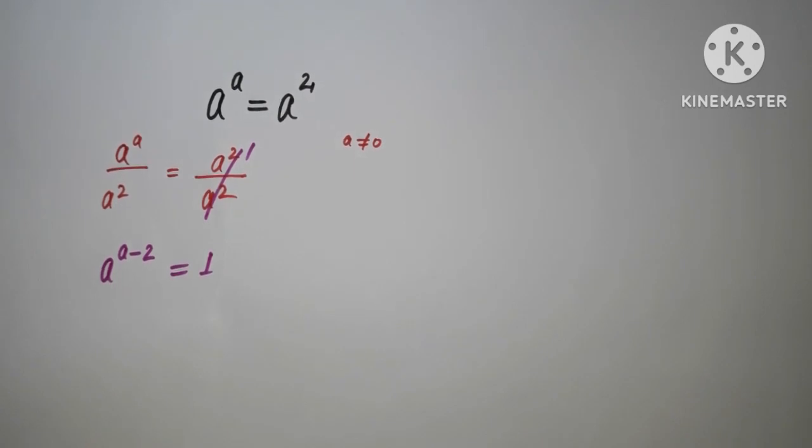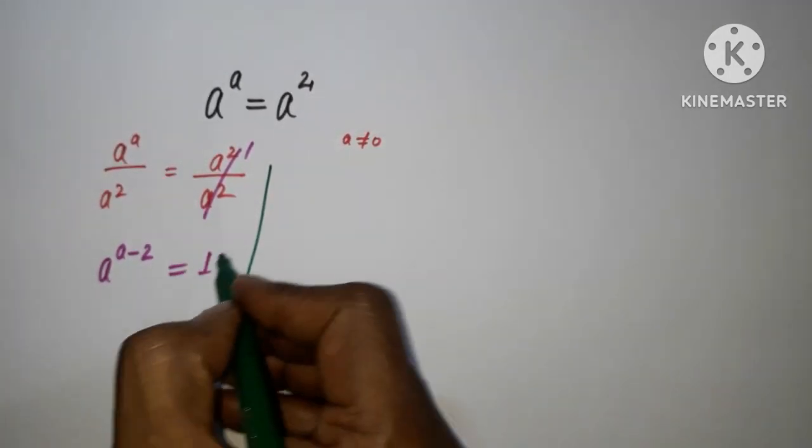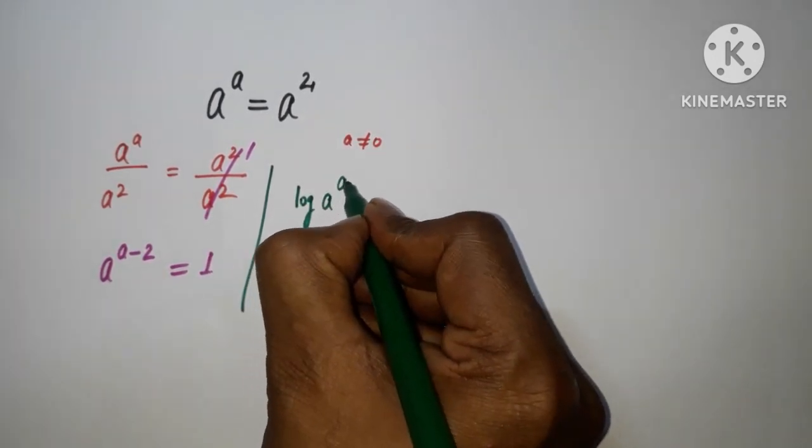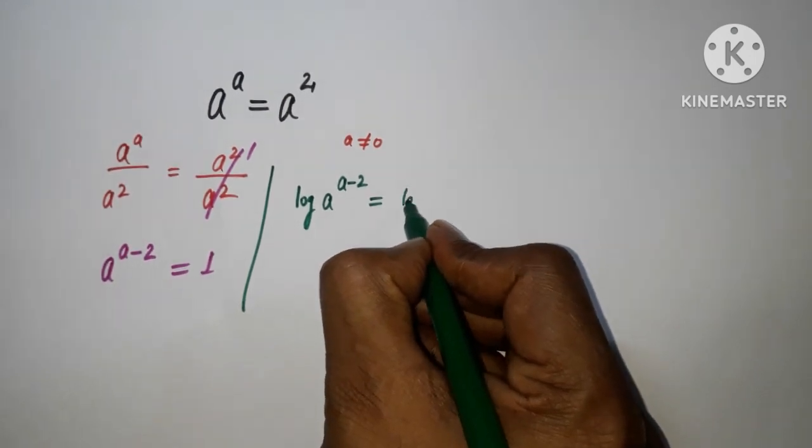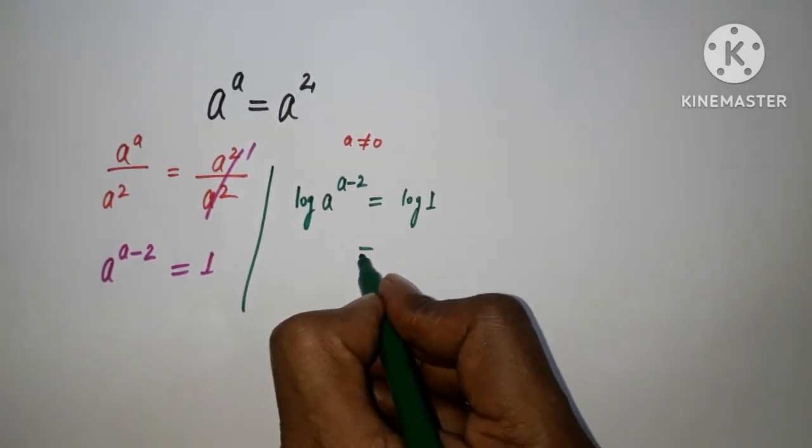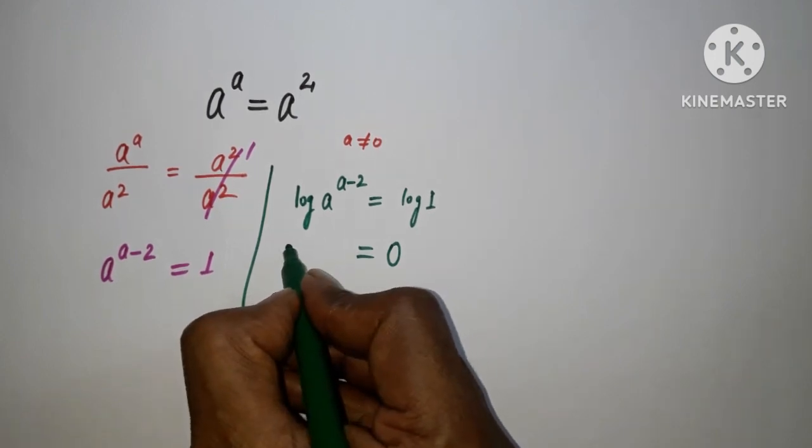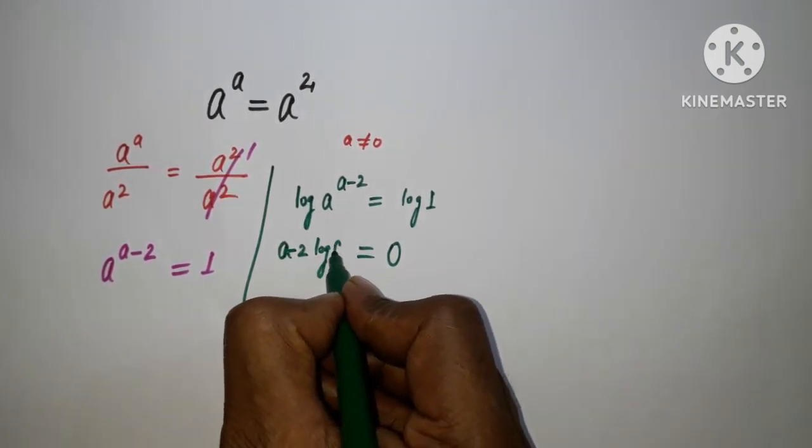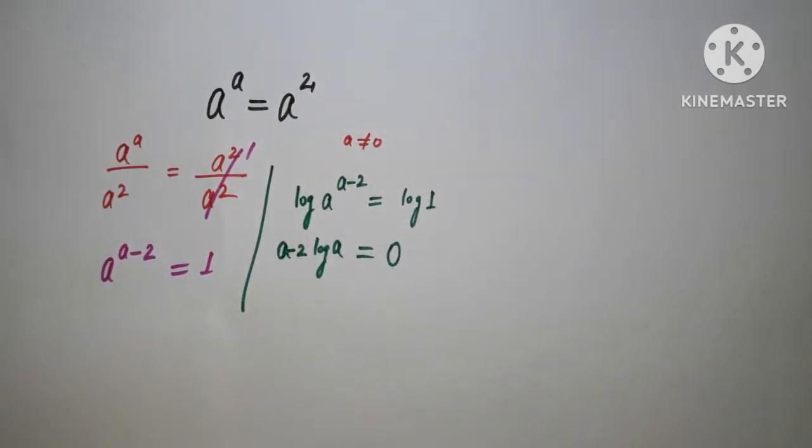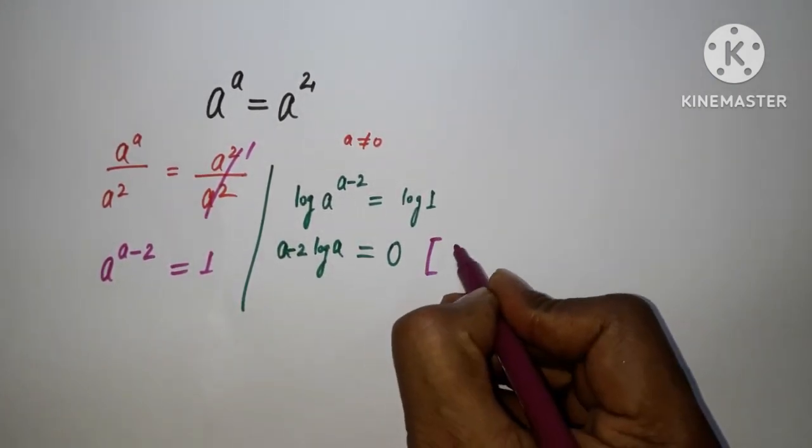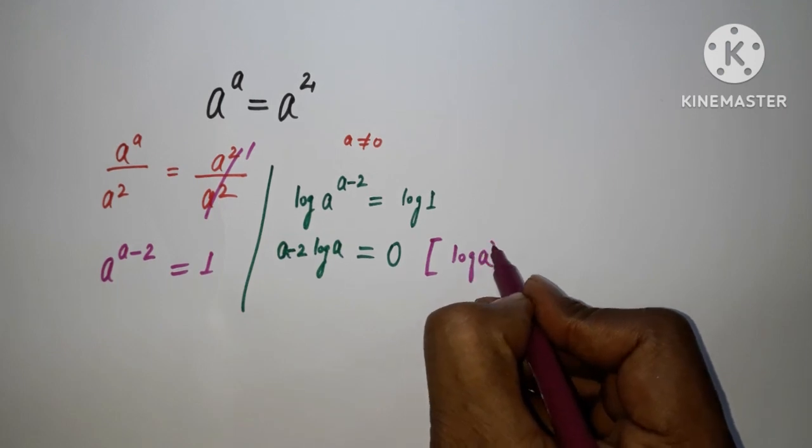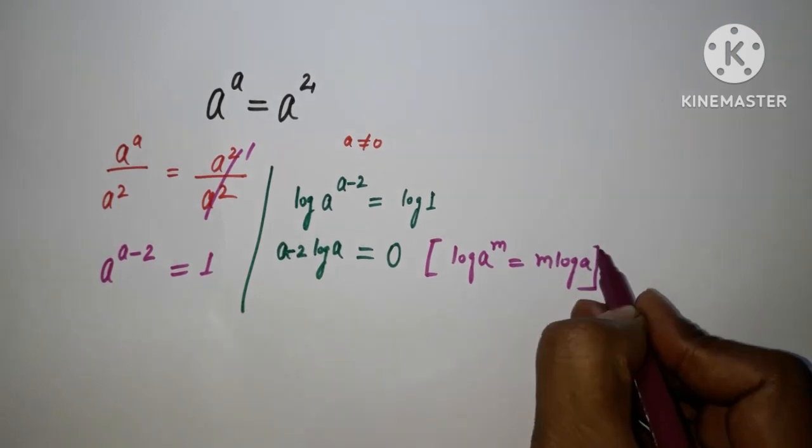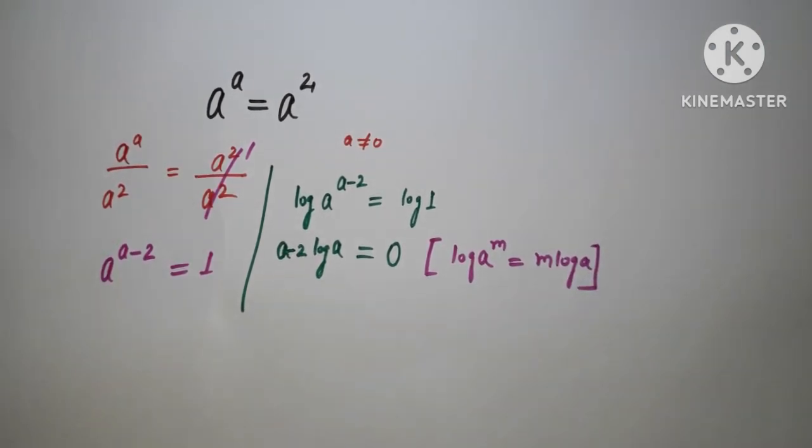Now it's time to take log on both sides. Log of a to the power a minus 2 equals log 1. Log 1 equals 0, and here we have (a minus 2) log a. Using the formula log a to the power m equals m log a, the exponent comes in front.